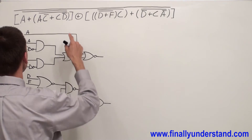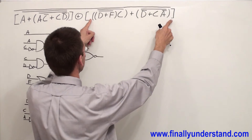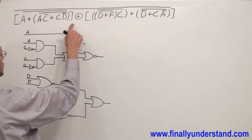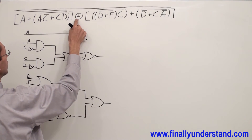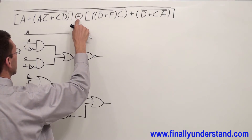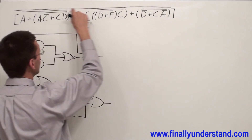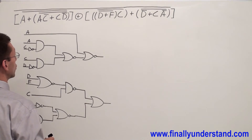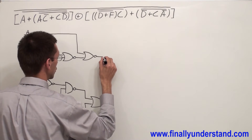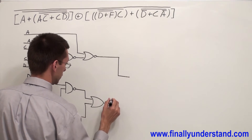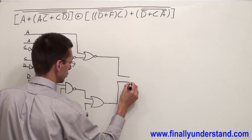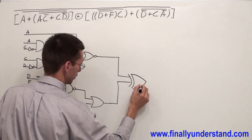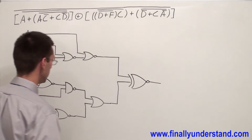I finished with the first brackets and the second brackets. Now I have to combine these two circuits together. These two are combined by XNOR — because this is the exclusive OR sign and I have a bar over the whole expression, making it exclusive NOR — so I connect the two outputs to one XNOR gate.